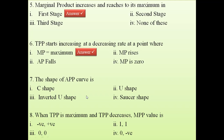The seventh question: The shape of the APP curve. All cost curves have a U-shape, and product curves are the exact reverse. If the average cost curve is U-shaped, then the average product curve will be an inverted U-shape.